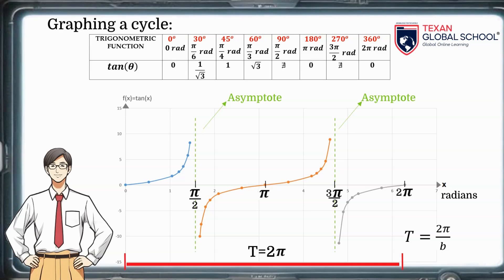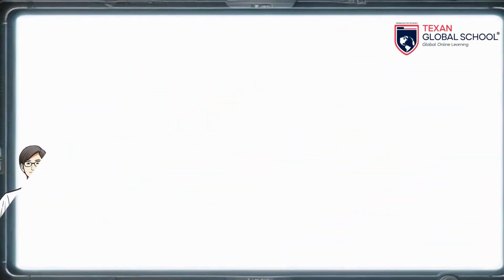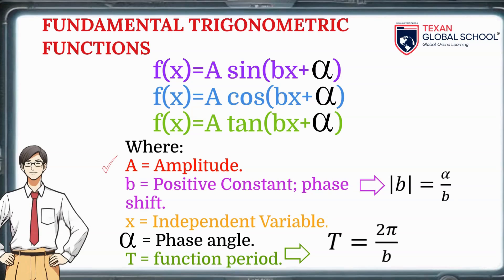Let's remember the detailed parts of each function. A is the amplitude of the function. B is a positive constant that will determine the magnitude of the displacement or phase shift, dividing alpha by B. X is the independent variable. Alpha is the phase angle, which shifts the graph to the left or right.